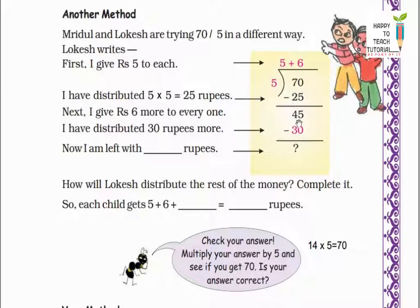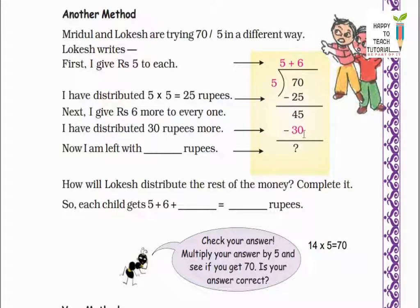45 rupees are still left to distribute among 5 children. Next Locis gives rupees 6 more to everyone. So here we add plus 6. So 5 into 6 equals 30. 45 minus 30 equals 15 rupees. So 15 rupees are still left to distribute. Kyunki Locis ke paas abhi bhi 15 rupees bachche hain jo distribute karne baaki hain.